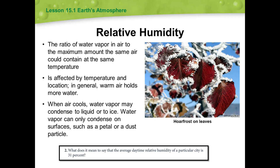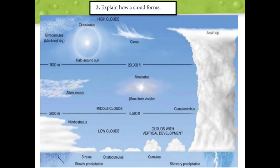Go ahead and take a look at question 2 in your workbook. Next, we're going to look at cloud formation. In order for condensation to occur, there must be a surface on which the water vapor can condense. Dew and frost form on surfaces such as blades of grass or flower petals. Like dew and frost, clouds are a result of condensation. During cloud formation, water vapor condenses on tiny particles in the air, including salt crystals, smoke, and dust. In the image you will see several different examples of cloud types.